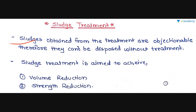This sludge obtained from treatments is generally objectionable; therefore it cannot be disposed of without treatment. The treatment of sludge is very important. Sludge treatment is aimed to achieve two things: first, volume reduction, and second, strength reduction.